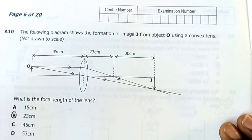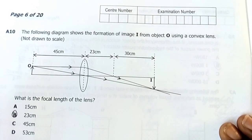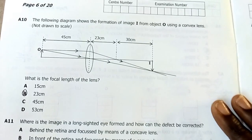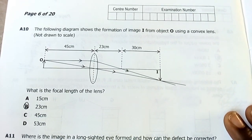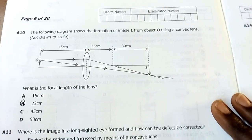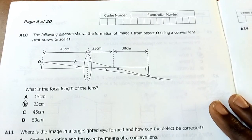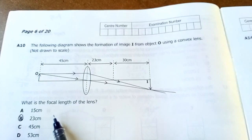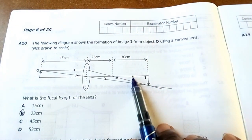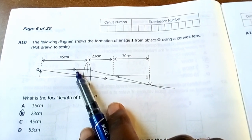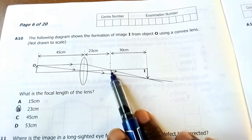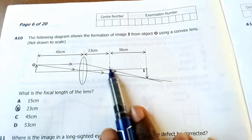Number 10: The following diagram shows the formation of an image from an object using a convex lens not drawn to scale. What is the focal length of the lens? The focal length is 23 centimeters. The fact that it's not drawn to scale - I did try to find the focal length using the lens formula and it gave me 24 point something centimeters, but from the diagram it is 23. All rays that are parallel and close to the principal axis like this guy here are bent by the lens such that they will pass through the first focal point. The distance from the focal point to the optical center is the focal length, so it's 23.